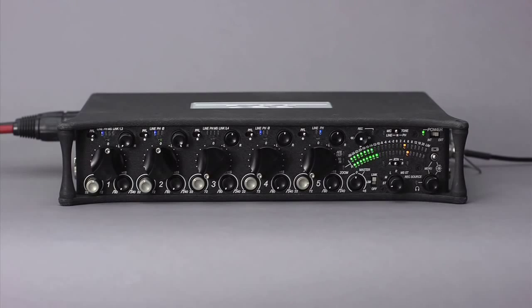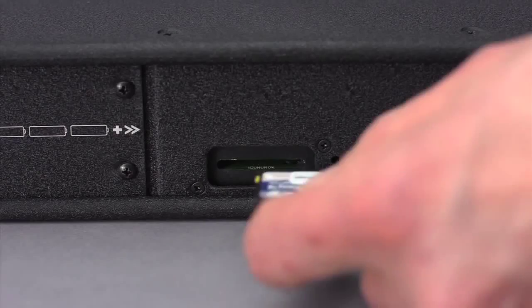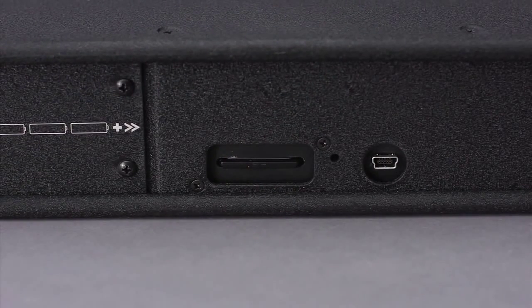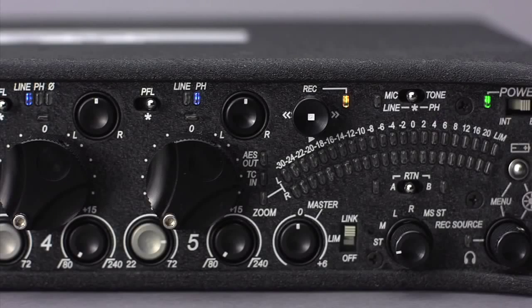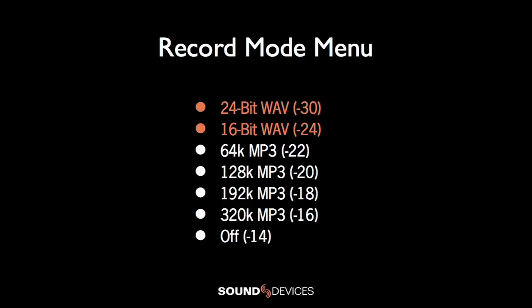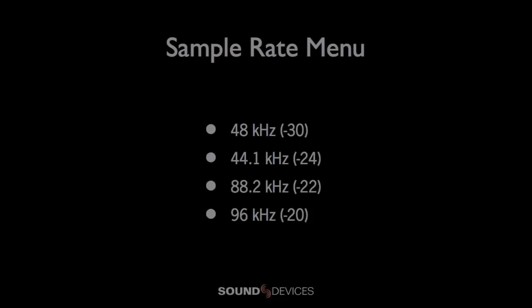Make certain to have a formatted SD or SDHC card in the card slot. If there is no card present with recording enabled, the record LED will flash orange. The 552 can record either wave or MP3 files. If you are recording MP3s, select the bitrate in the record mode menu; otherwise, set your file bit depth here.